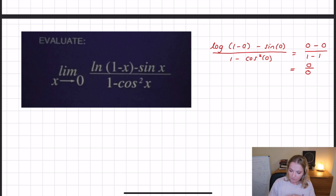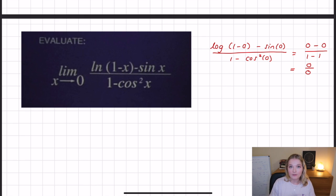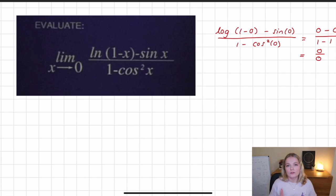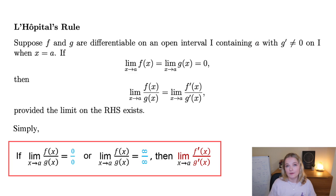So what we find is we have zero over zero, which does not mean the limit doesn't exist — it just means it's currently undefined. We've plugged in some values and we see that this is quite a complex limit. There are two ways we can solve it, and we're going to use L'Hôpital's rule.